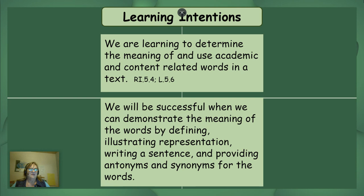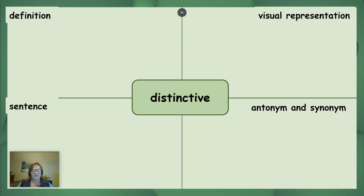We're also learning to determine the meaning of and use of academic and content-related words in a text. We will be successful when we can determine the meaning of words by defining, illustrating, or representing them, writing a sentence, and providing antonyms and synonyms. Let's look at the academic vocabulary — we can look up the definition in the dictionary, but a visual, using the word in a sentence, and identifying antonyms and synonyms are also useful to understand and remember the meaning.